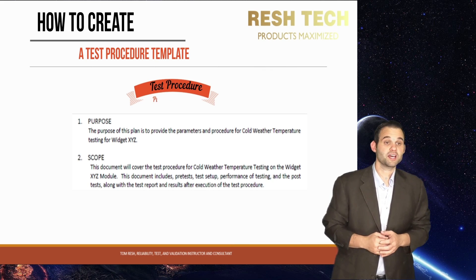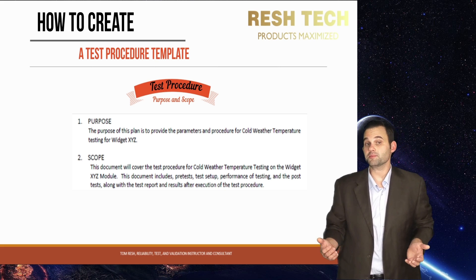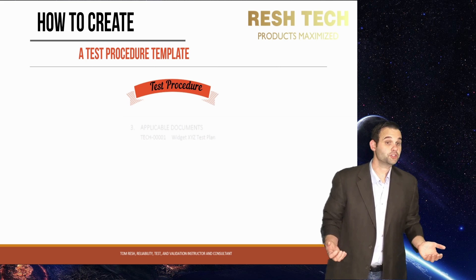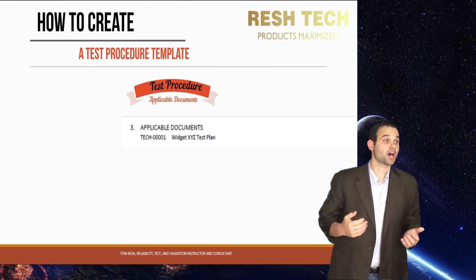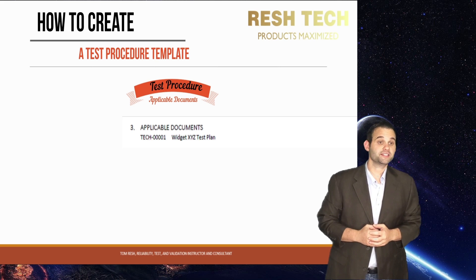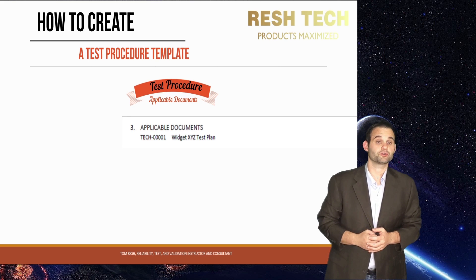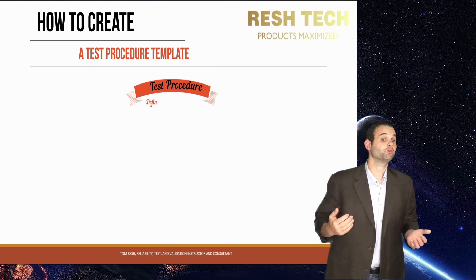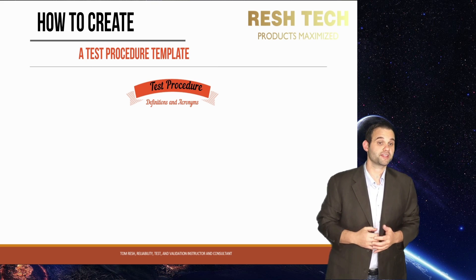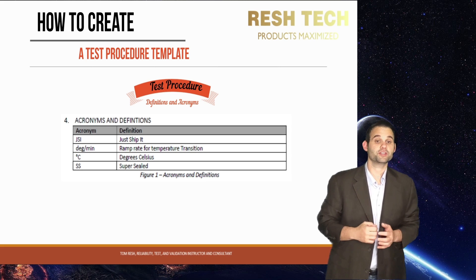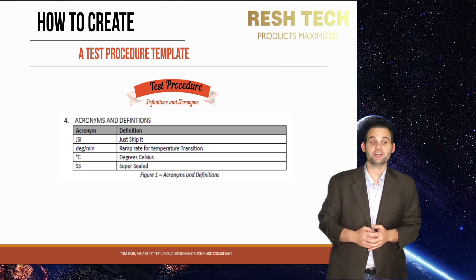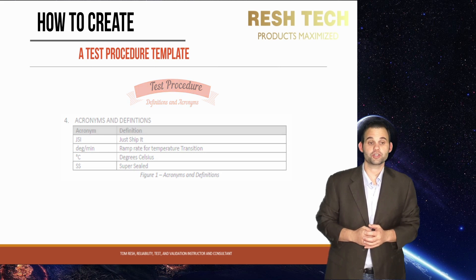Next up is scope and purpose — list out the scope of the test procedure and the purpose of performing the test. On to applicable documents: this is where you put the document number and title for the test plan that this test procedure was derived from, and any other supporting test documentation. If you have a separate test report, include its title and document number. You also need a section for acronyms and definitions — don't assume the person running the test knows every acronym or definition in the procedure, so make sure all terminology is clear.